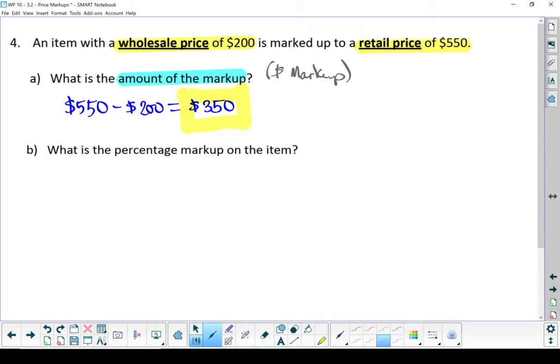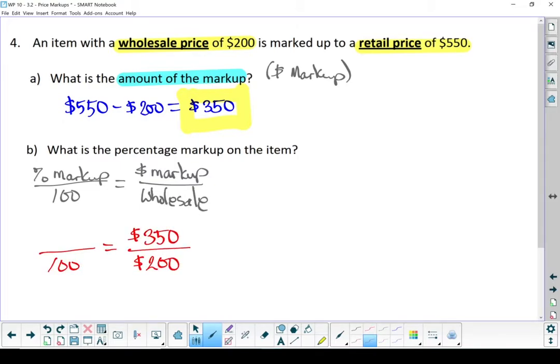Part B asks, what's the percentage markup on the item? Let's write our formula down. Let's put in what we know. Okay, we've always got this 100 in the formula. Our markup was $350, and the wholesale price is $200. There are times when the markup is going to be more than the wholesale price.